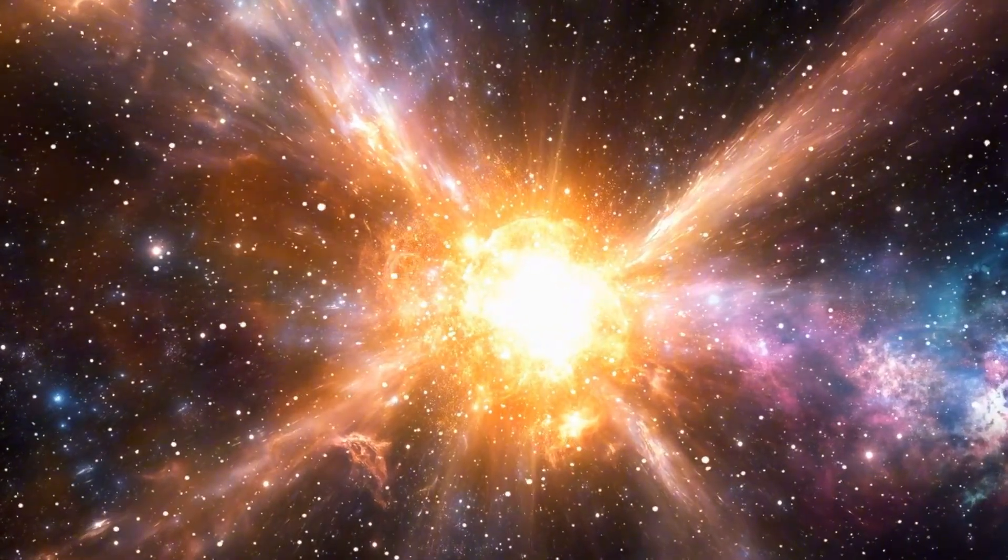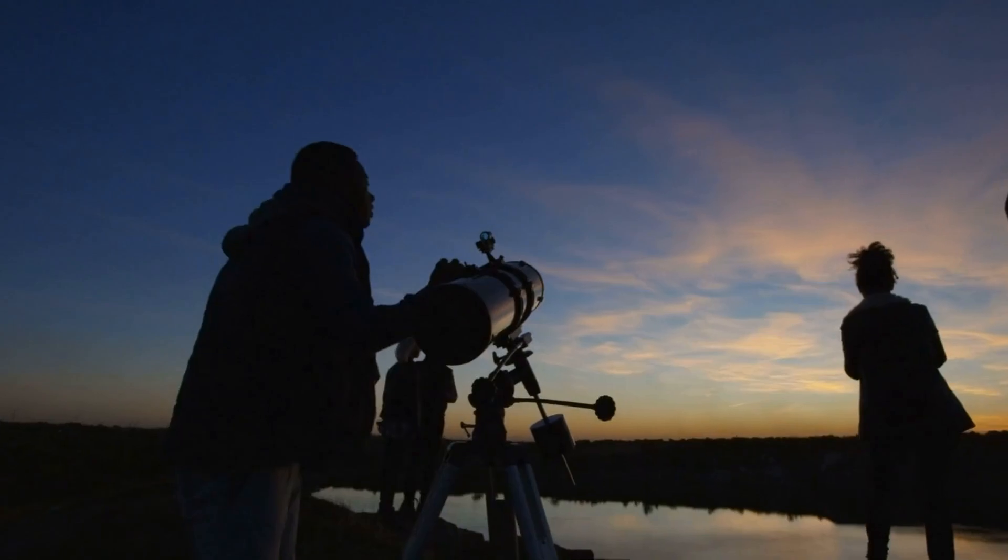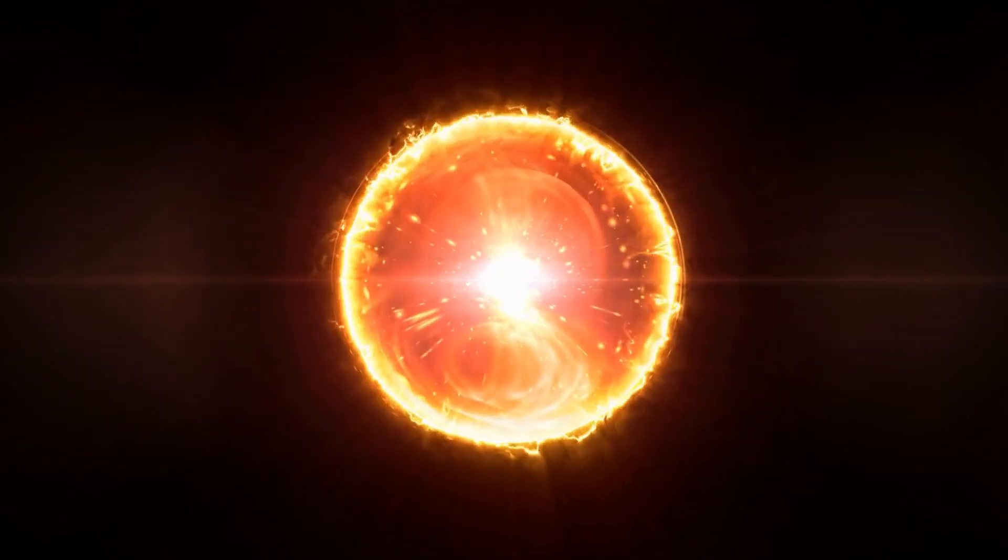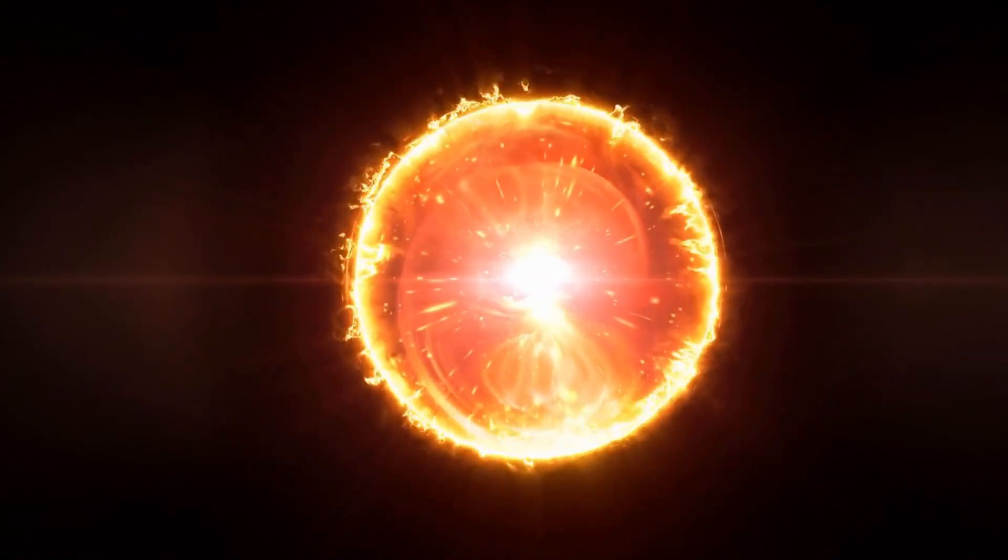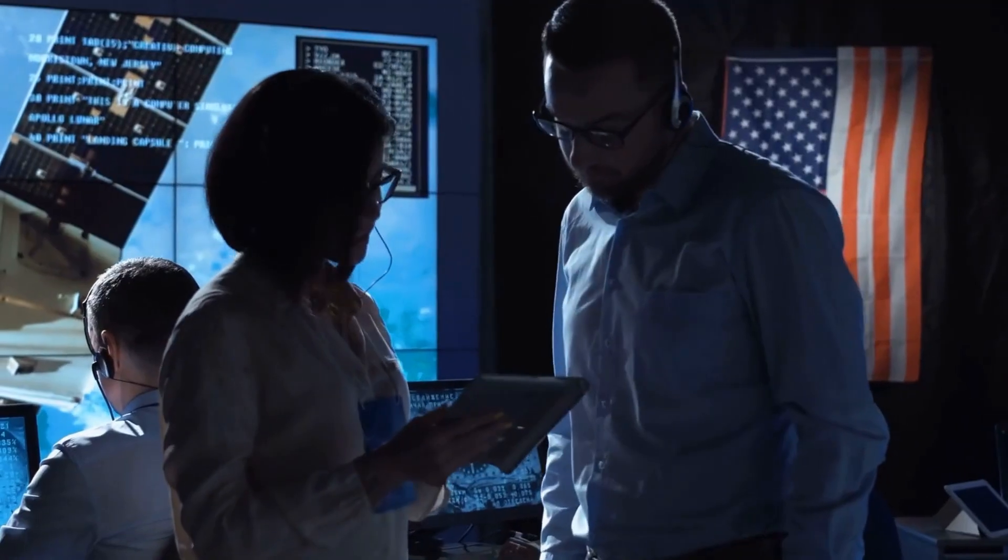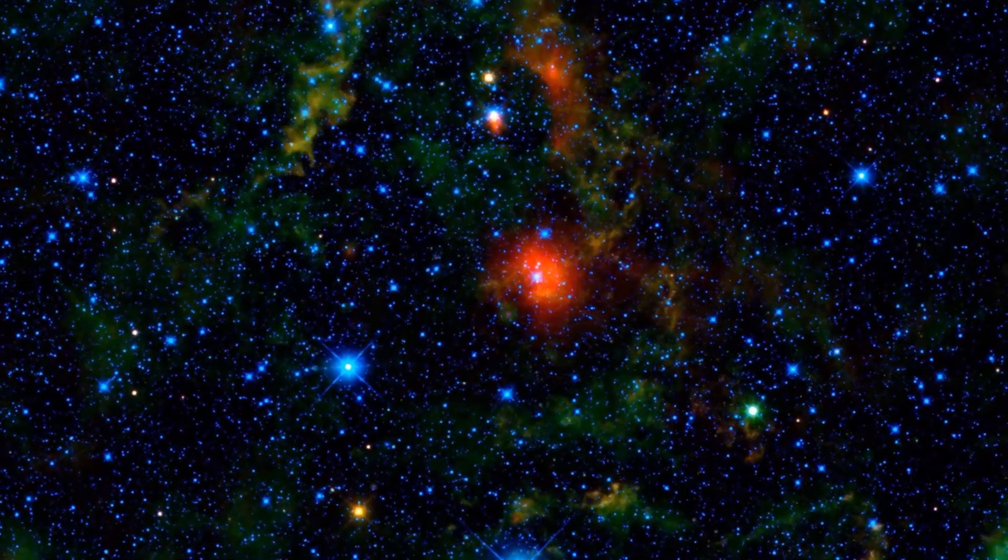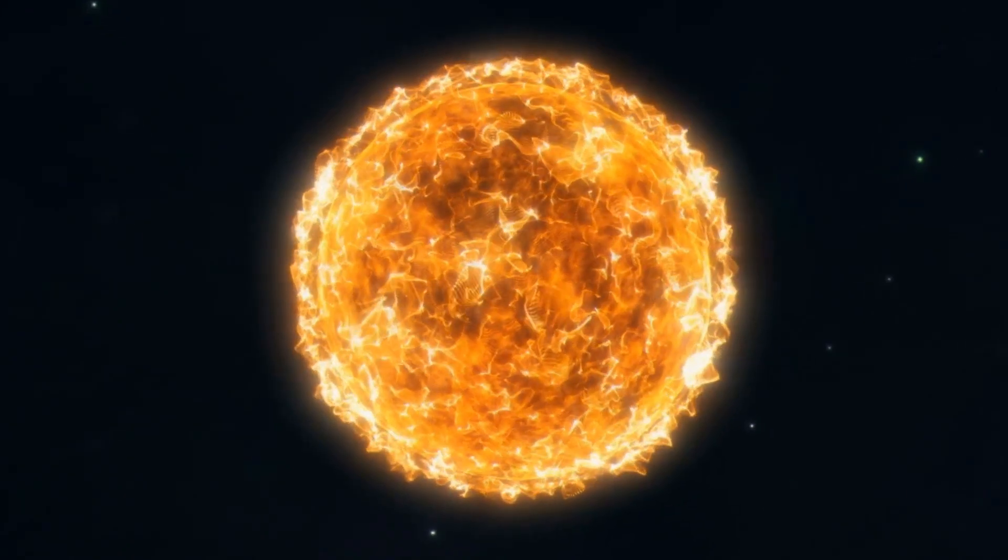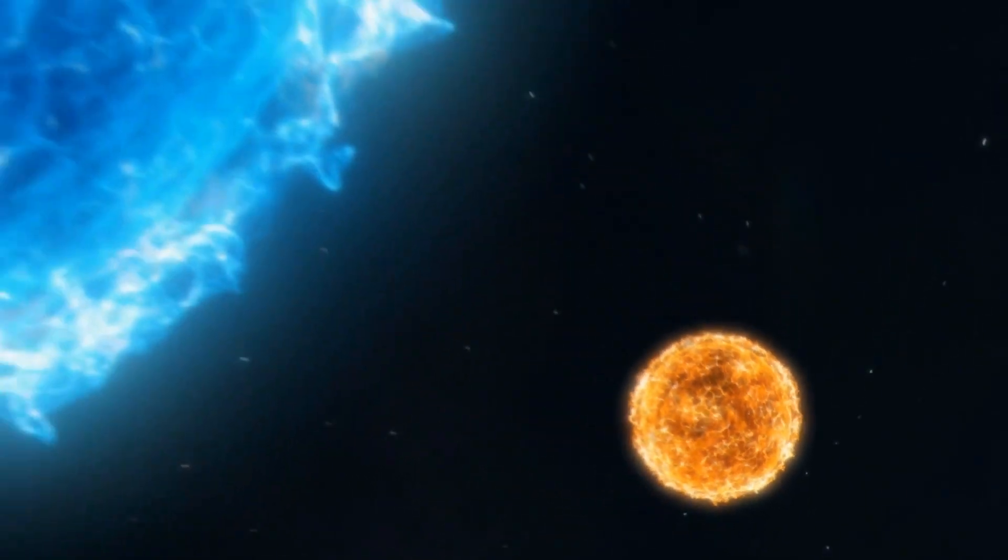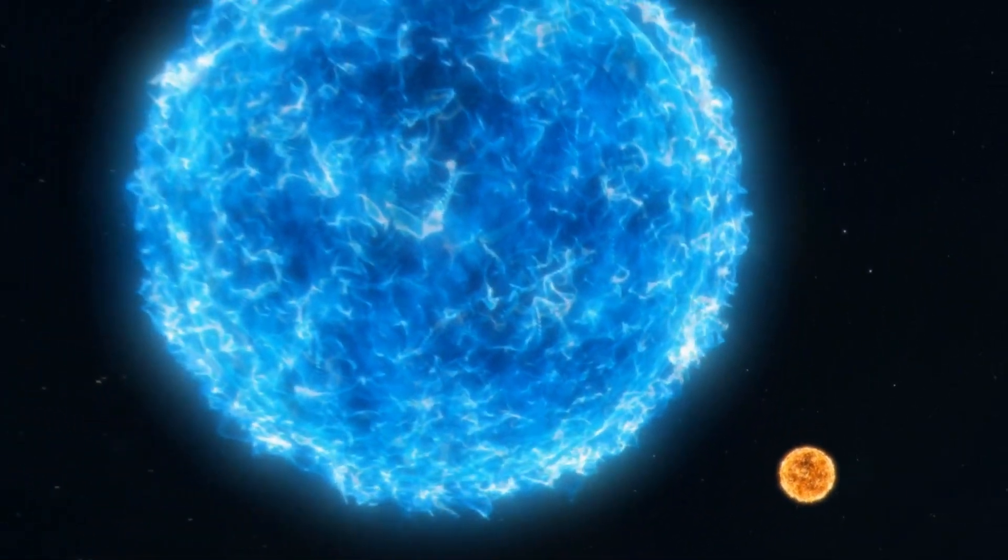Now, stars don't go supernova silently, they give off clues, and in late 2019, Betelgeuse gave us a big one. It started to dim, a lot. Astronomers noticed it had dropped to about a third of its usual brightness, and it stayed that way for weeks. People around the world started to wonder, was this it? Was Betelgeuse about to explode?